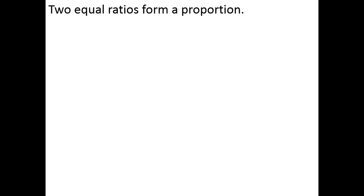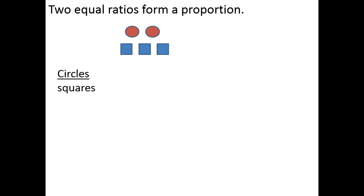If you have two ratios that are equal, then they form what we call a proportion. Going back to our squares and circles, we can compare the squares to the circles, or we could compare the circles to the squares. The order is important, because ratios have an implied ordering. So if we compare the number of circles to squares, we would say that the ratio is 2 to 3.